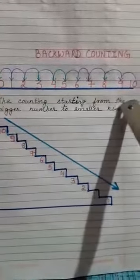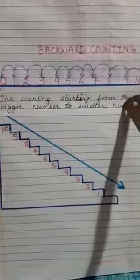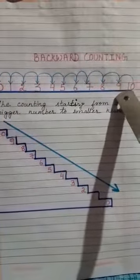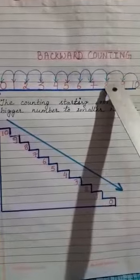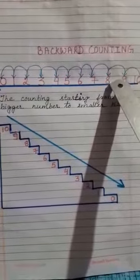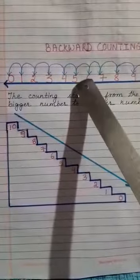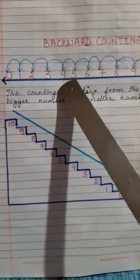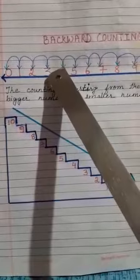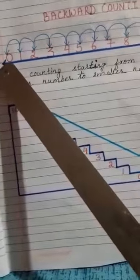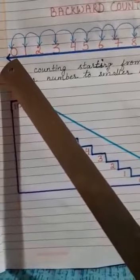Like see, which is the bigger number? 10. Start from 10. Like 10, before 10 what number will come? 9. Before 9, 8. Before 8, 7. Before 7, 6. Before 6, 5. Before 5, 4. Before 4, 3. Before 3, 2. Before 2, 1. And before 1, 0. So 0 is the smallest number.